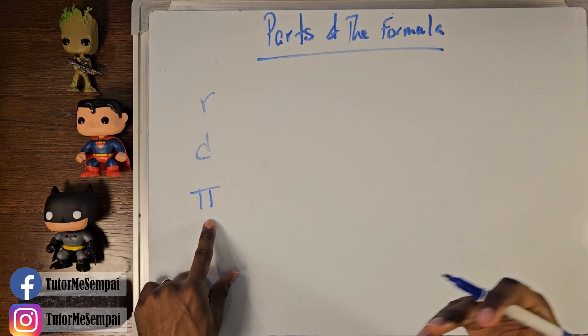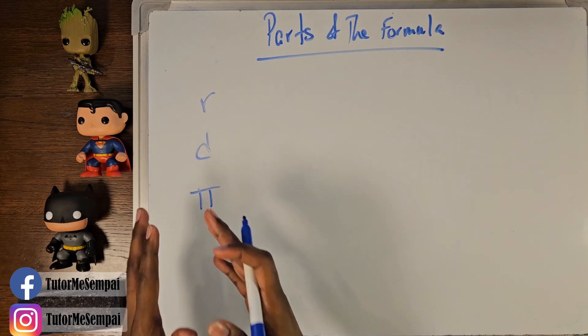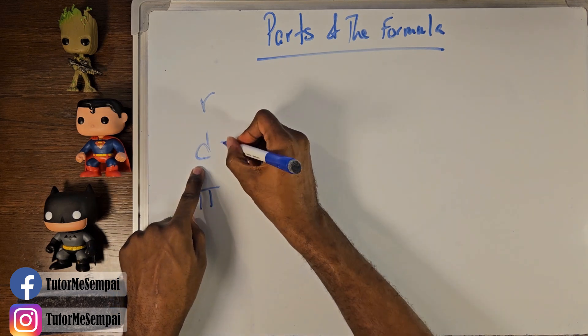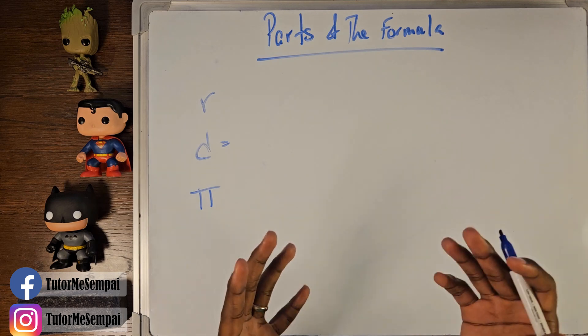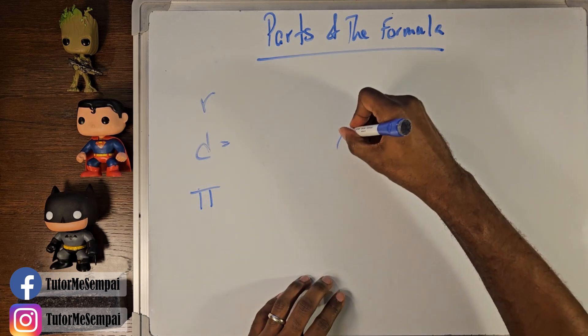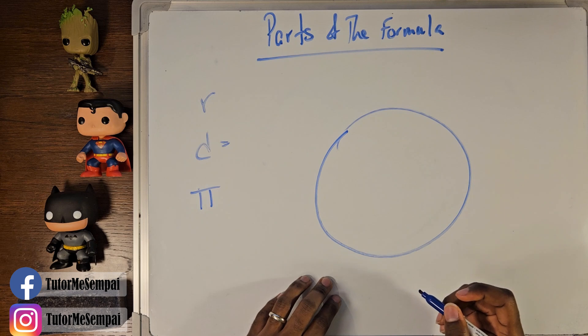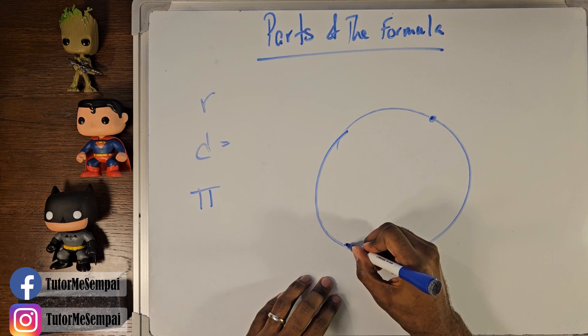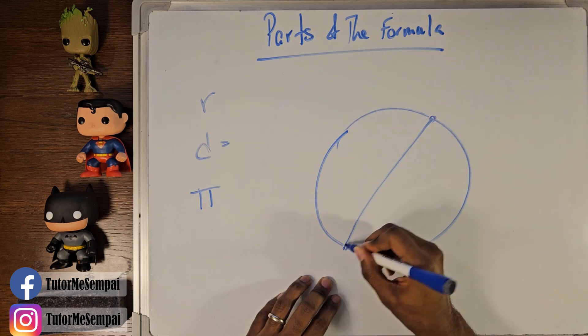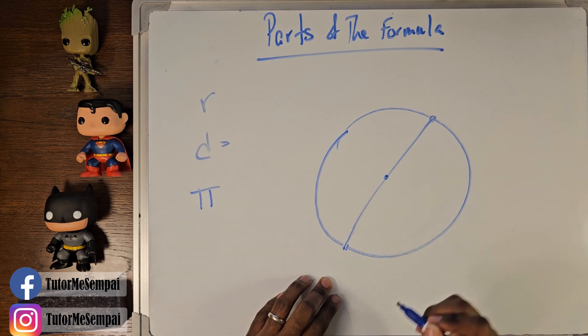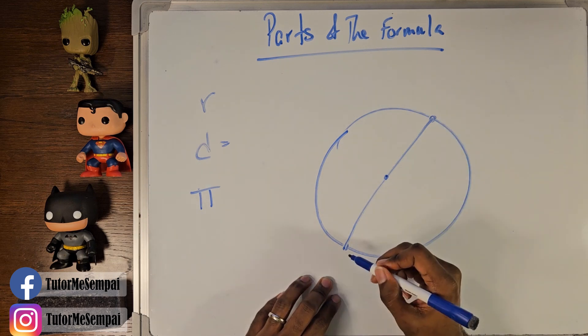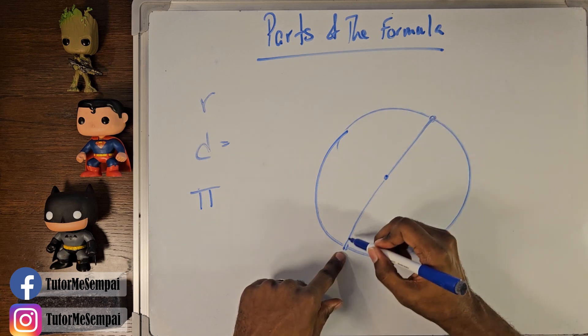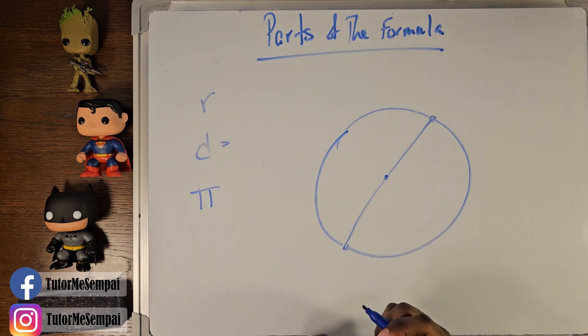But what is the diameter? Well, your diameter is going to be the distance, let's say we have a circle here, it's going to be the distance between two points on your circle that goes directly through the center of your circle. So you can think of it as a line segment that connects two points on your circle, but it has to go through the middle. That's your diameter.